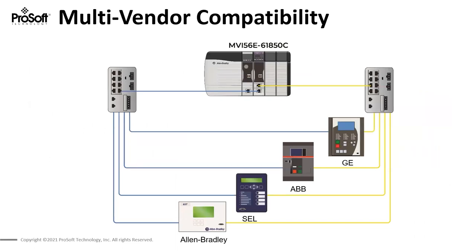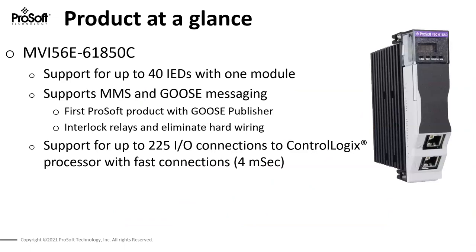This new solution provides multi-vendor capability. The IEC 61850 protocol can be used among multiple vendors such as SEL, ABB, GE, and even Allen-Bradley, which has some 857 relays supporting 61850. One of the key new features is that we can now support up to 40 IEDs with a single module — double the 20 IEDs supported by our gateway module. Additionally, with our gateway module we have supported MMS and GOOSE subscriber for years, but this is our first product that supports GOOSE publisher.